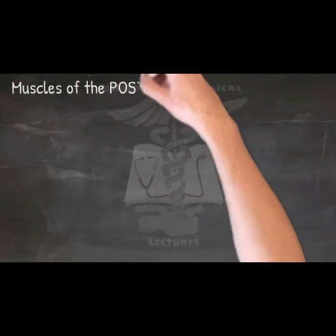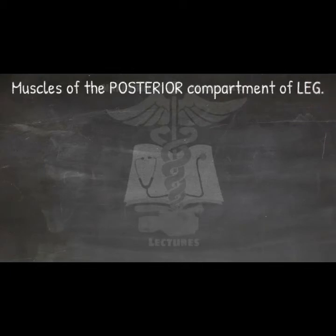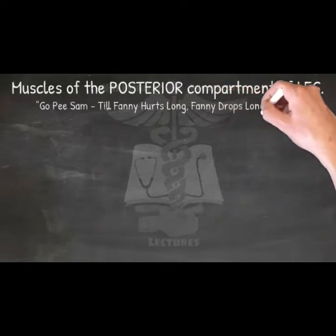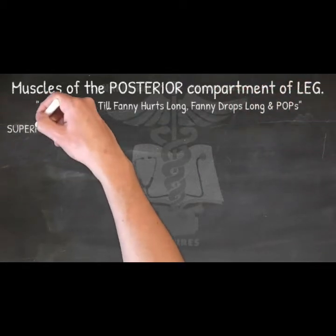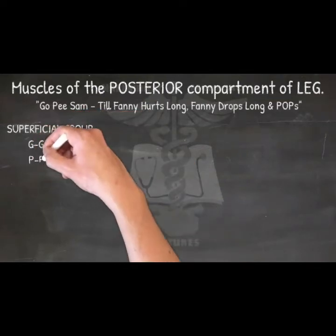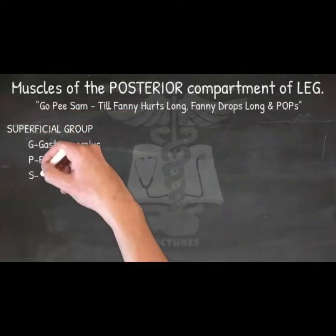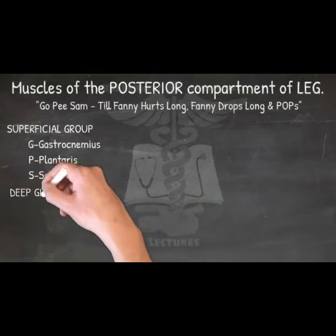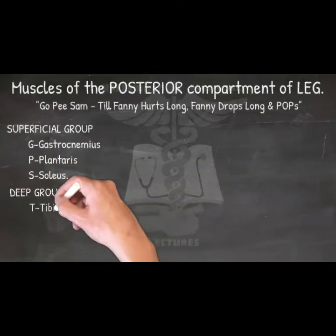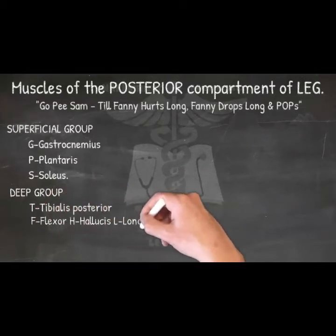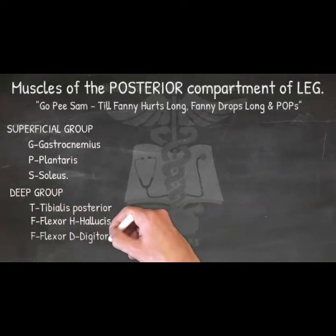Muscles of the posterior compartment of the leg — mnemonic: 'Go P Sam Till Fanny Hurts; Long Fanny Drops Long And Pops.' Superficial group: Gastrocnemius, Plantaris, Soleus. Deep group: Tibialis posterior, Flexor hallucis longus, Flexor digitorum longus.